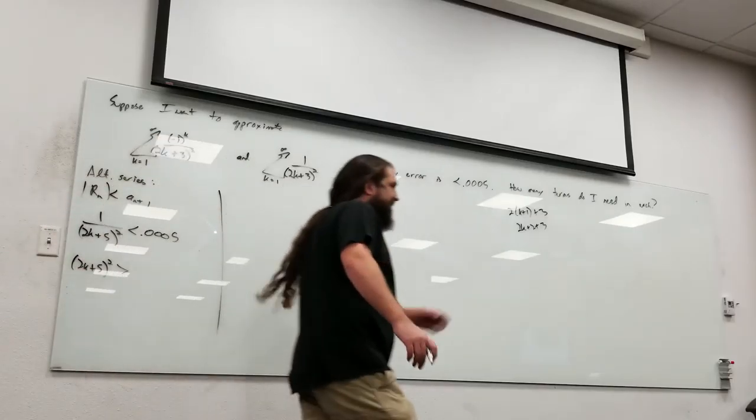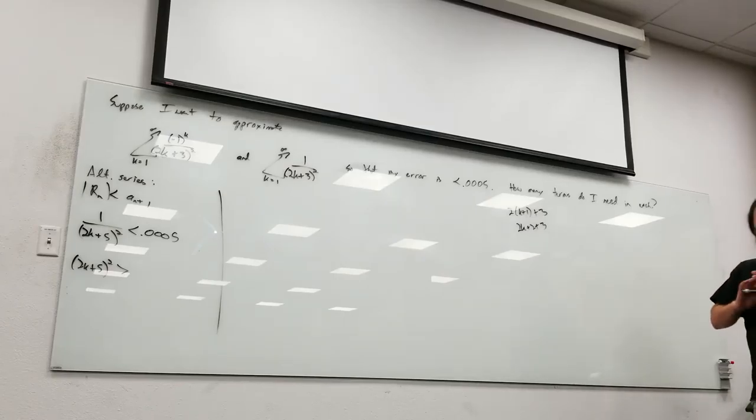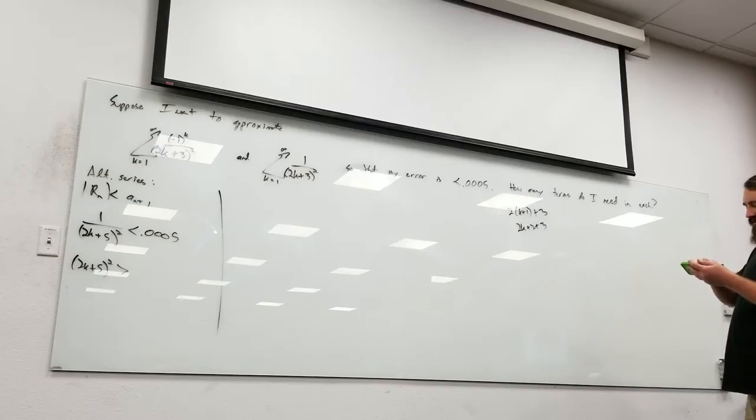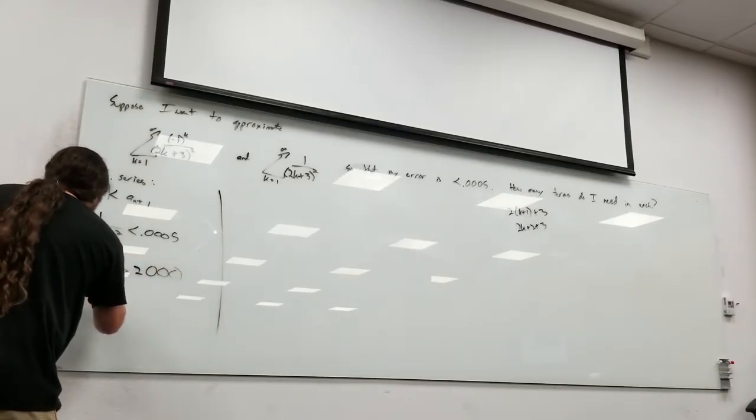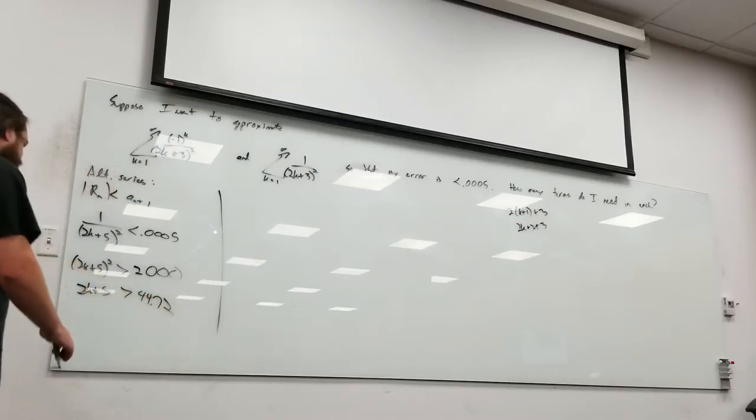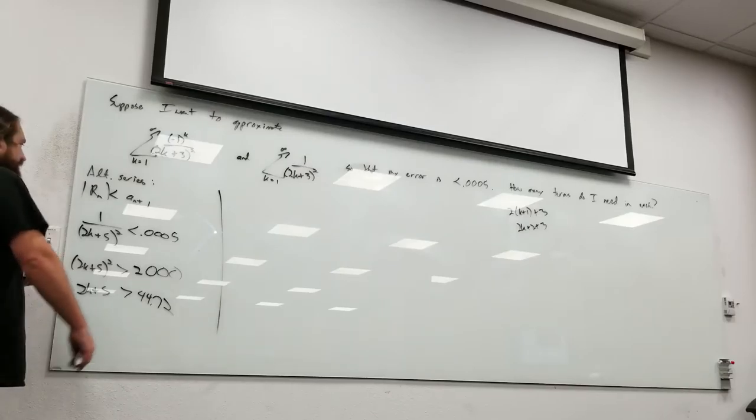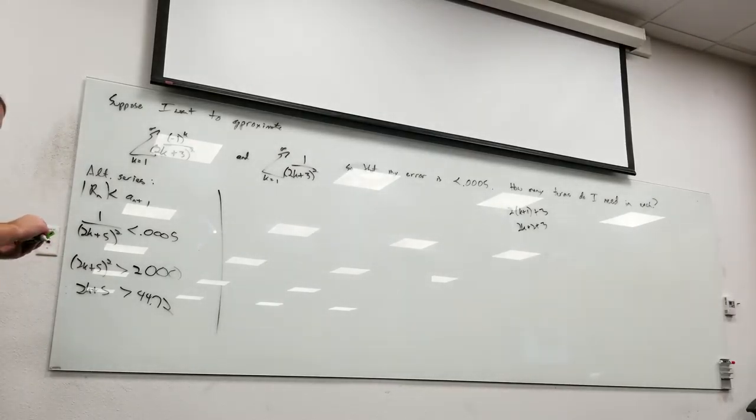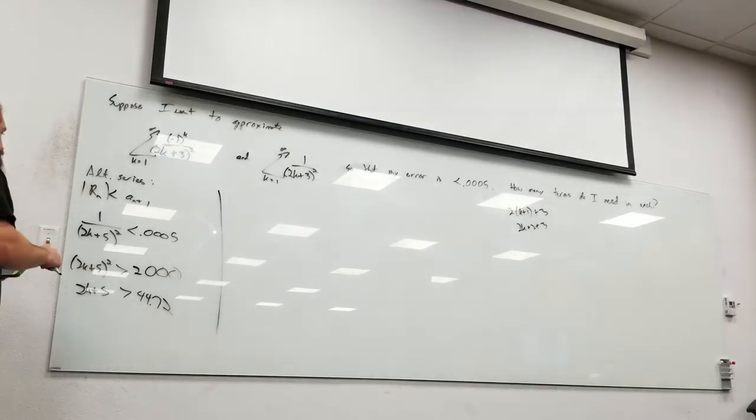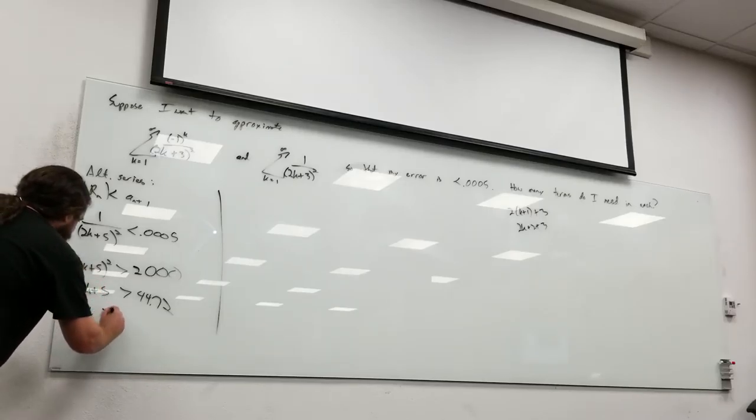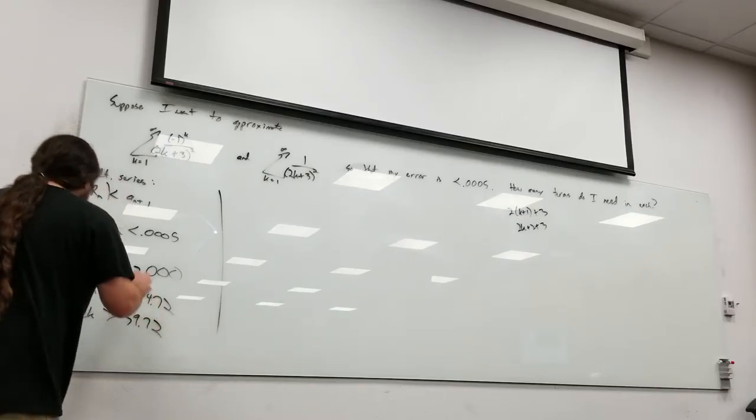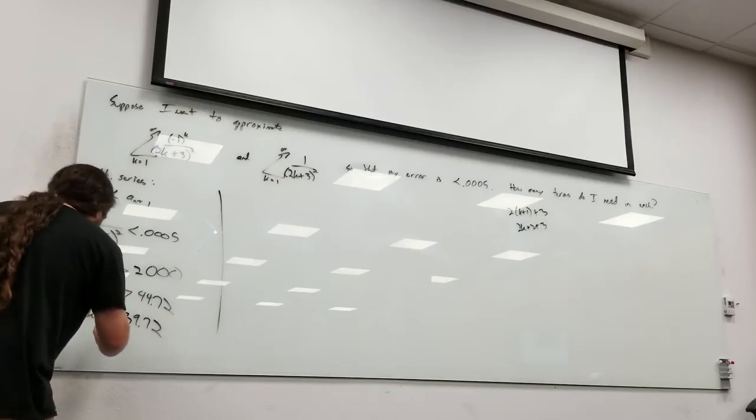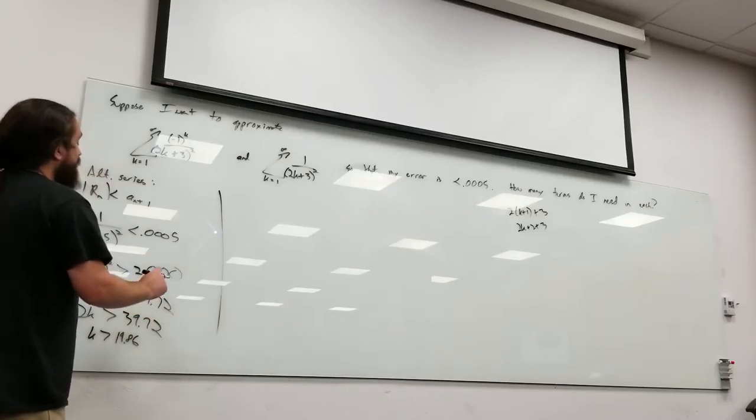So this is just 2k plus 5 squared needs to be bigger than whatever the reciprocal of 0.0005 is, which is 2,000. So this needs to be bigger than 2,000. So if I square root that, I've got 2k plus 5 needs to be bigger than 44.72 approximately. So 2k is bigger than 44.72 minus 5, which is 39.72. So if I divide that by 2, k is bigger than 19.86, and so I need 20 terms.